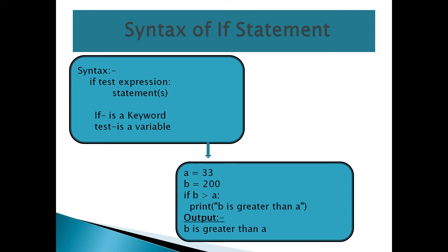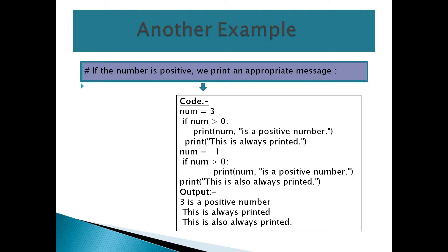The syntax is: if <expression>: — where 'if' is a keyword and 'expression' is the condition. If the condition is true, it executes the statement block. For example: a equals 33, b equals 200. If b is greater than a — 200 is greater than 33 — the condition is true, so we simply print 'b is greater than a'.